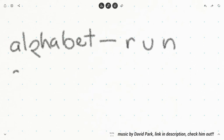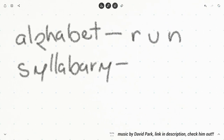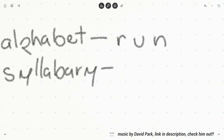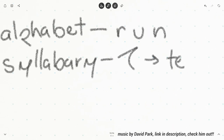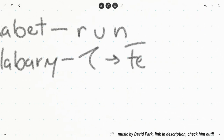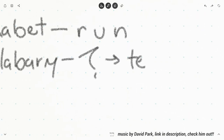Now in a syllabary, like for example Japanese, you have a glyph which means 'te' — so instead of each glyph representing one sound, you have each glyph representing an entire syllable. This 'te' is an entire syllable.